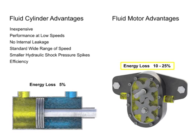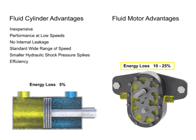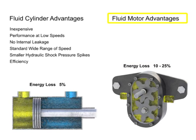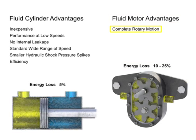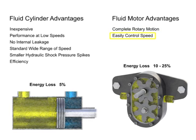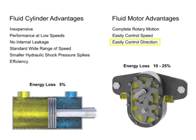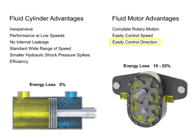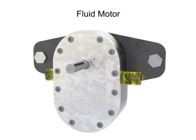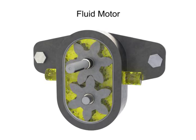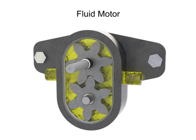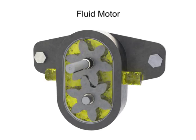However, despite all of these setbacks, fluid motors are advantageous due to their complete rotary motion and the ease with which their speed and direction can be controlled. On most fluid motor applications, it's necessary to have a motor which can accept high pressure on either port so that the motor can be reversed.